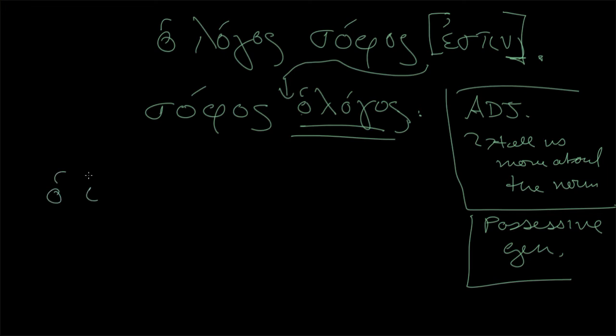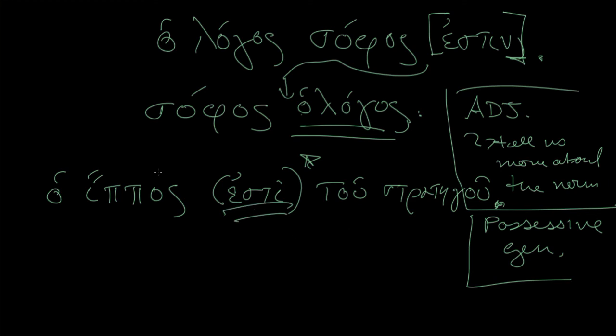So the example Shalmerdine uses is ho hippos, the horse. And then we want to say, is of the general. So then we have tou strategou. So the horse is of the general. It is the general's horse. That's what we're expressing here. It's not the horse of the general stopped the army or whatever. This is a full sentence. We can put a full stop here because we have a verb, even if in Greek they didn't need to express it. So you could really just have a word, a full sentence in Greek without ever saying the verb.